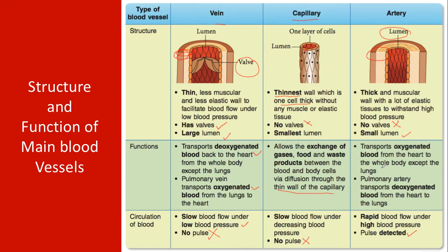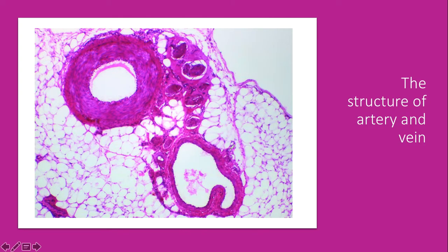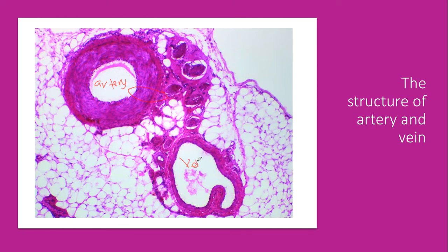To summarize, remember the comparison of the three main blood vessels: which one has the thinnest wall, which has thick muscular walls, and which carries oxygenated or deoxygenated blood. Looking at the micrograph, you can identify the artery by its thick muscular wall with elasticity, and the vein by its much thinner wall. The artery's lumen is smaller compared to the vein's lumen.